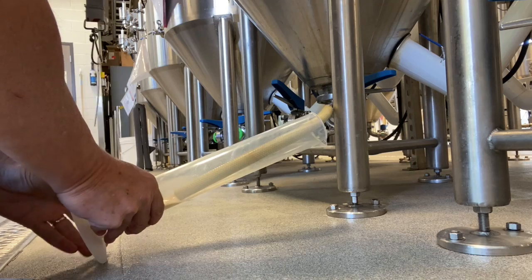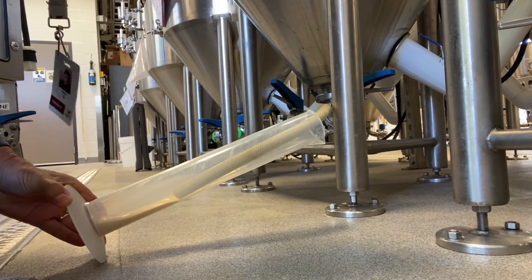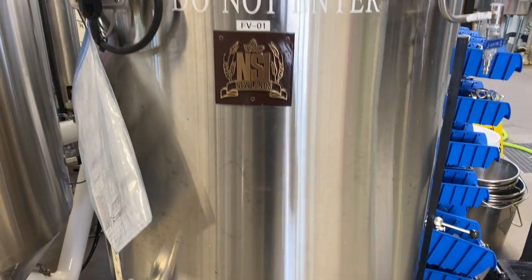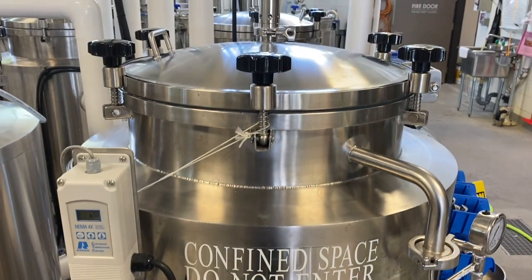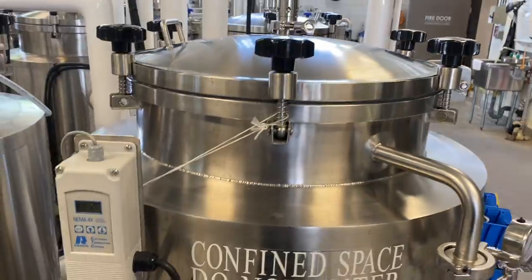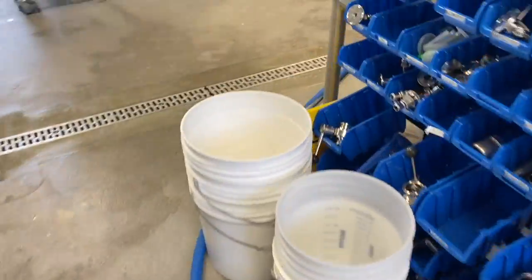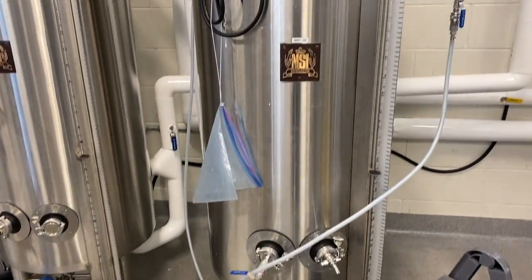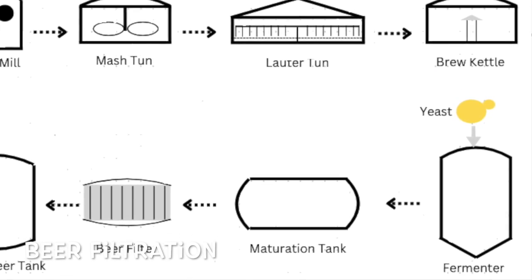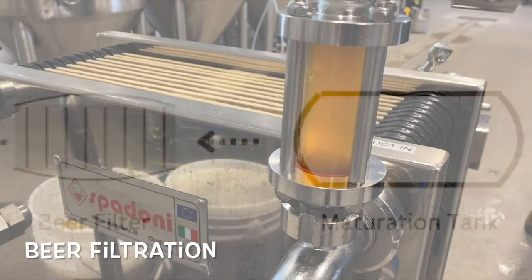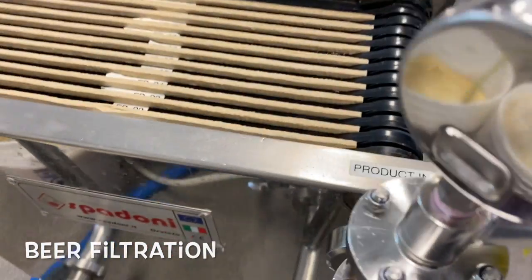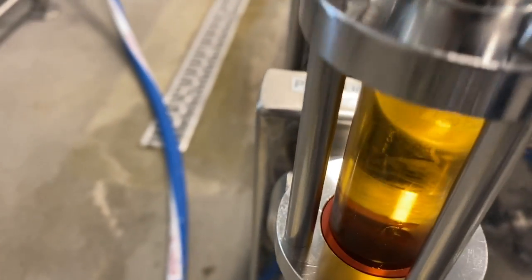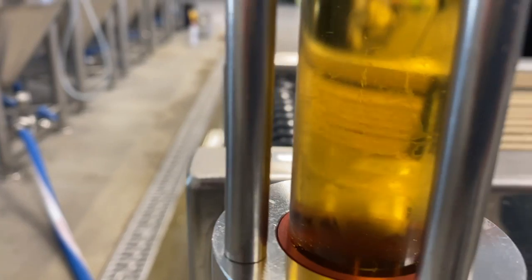Once the fermentation is done, the vessel is crash cooled and the yeast slurry is collected for the subsequent fermentation. At this point we have a product which is called green beer, which still has to go through the aging process, which can last between one and several weeks. After the aging process is complete, the beer is either transferred or filtered into the bright beer tank. Beer filtration involves the process of passing a beer containing solid particles through a medium with small pores to capture and prevent these particles from passing through.